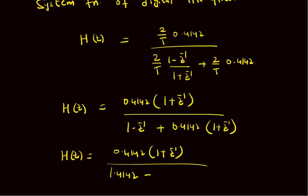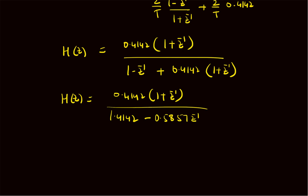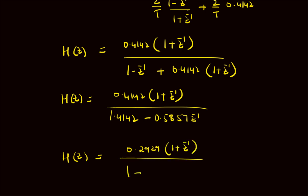To get a standard structure for H(z), we divide both numerator and denominator by 1.4142, so that H(z) = 0.2929 × (1 + z⁻¹) divided by 1 minus 0.4142z⁻¹. That is the final structure of the system function in the digital domain — the system function of the digital IIR filter.